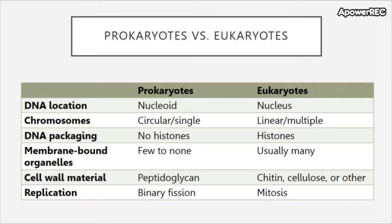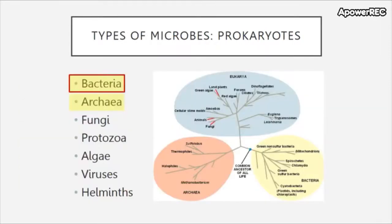The cell wall material in prokaryotes has peptidoglycan, whereas in eukaryotes you can find chitin, cellulose, or others. Replication in prokaryotes occurs through binary fission, whereas in eukaryotes it occurs through mitosis. As you should recall, there are three domains of life: the Eukarya, Archaea, and Bacteria. We will focus primarily on bacteria because they are well studied, implicated much more significantly in human disease, and because we know almost nothing about Archaea.